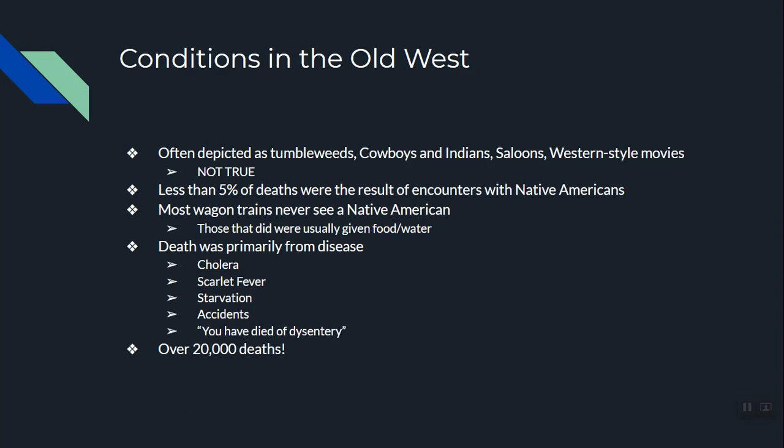Conditions in the Old West are very different from what you see on TV. You've probably seen a Western — a John Wayne or Clint Eastwood movie — depicting tumbleweeds, cowboys and Indians shooting it out, drunken brawls in saloons. That's completely Hollywood. Less than five percent of all deaths in the Old West were from Native American encounters. Truthfully, Native Americans were more likely to help settlers than hurt them. Most death out west came from disease, starvation, or accidents — our best guess is over 20,000 deaths from disease and accidents during westward migration.